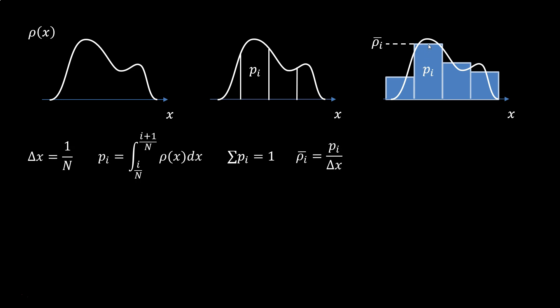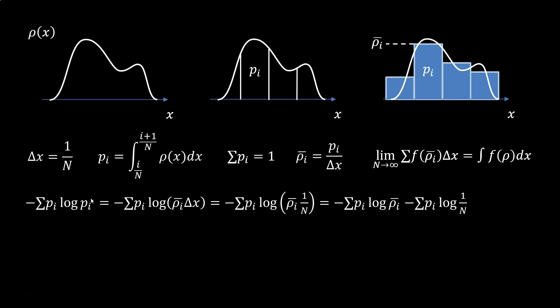We also get an average rho i by dividing each pi by delta x. By construction, the average rho i will tend to rho as n goes to infinity. So the sum of any function f of the average rho i will tend to the integral of f of rho. Now let's prepare minus p log p for the limit. Pi is the average of rho i times delta x, which is 1 over n. Log of the product is the sum of the logs.